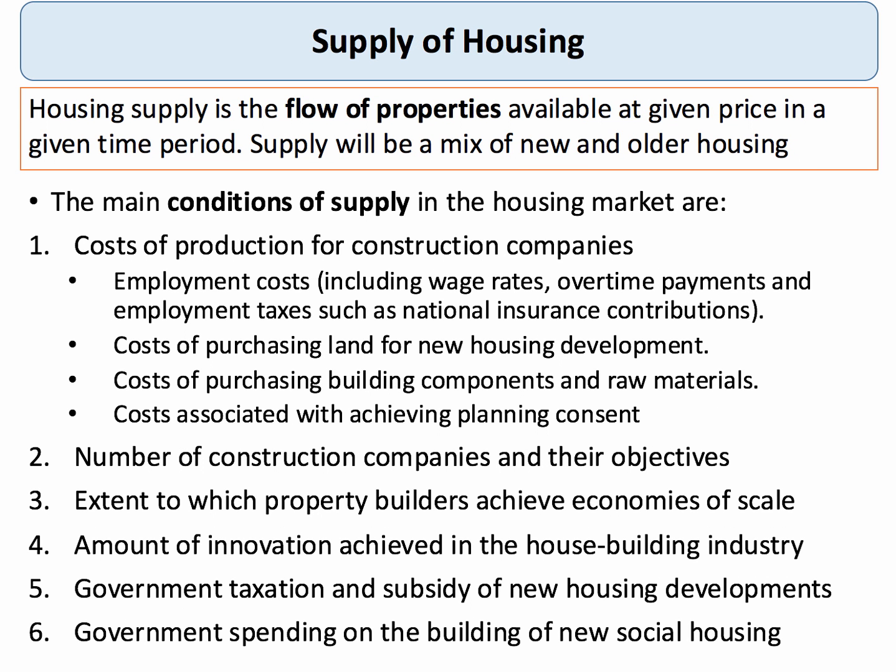The supply side of course focuses on construction companies and the building industry in general. Housing supply is a flow concept — the housing supply is the flow of properties that are available to buy at a given price in a given time period. Typically, housing supply will be a mix of newly built homes and older property. The housing supply in the economy is affected by the conditions of supply, and fundamental to this is the idea of cost — in other words, what does it cost to build and deliver new homes to the marketplace? Costs of production for construction companies are absolutely key to understanding housing supply.